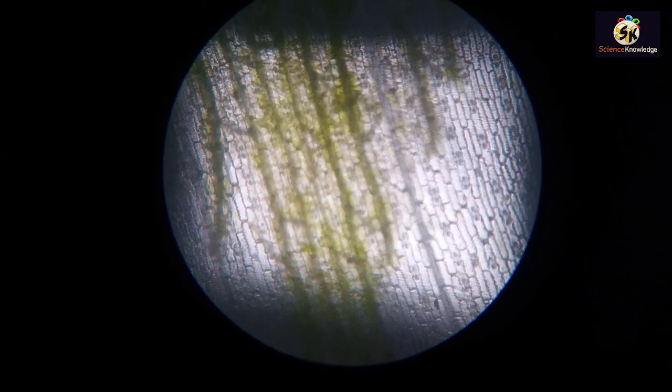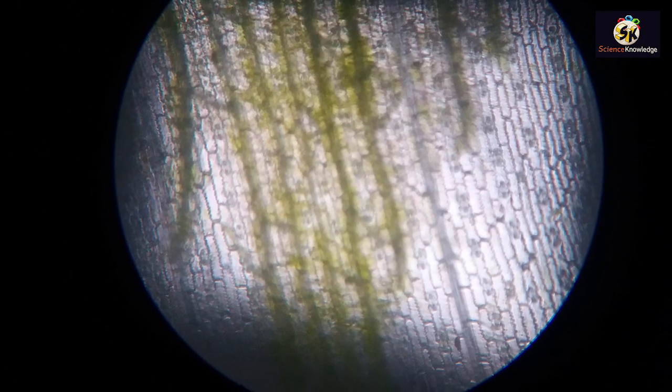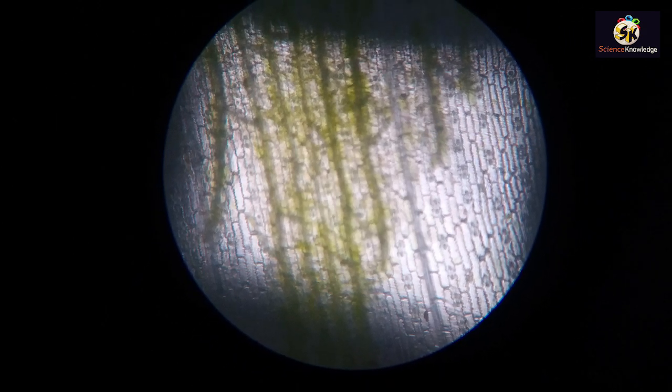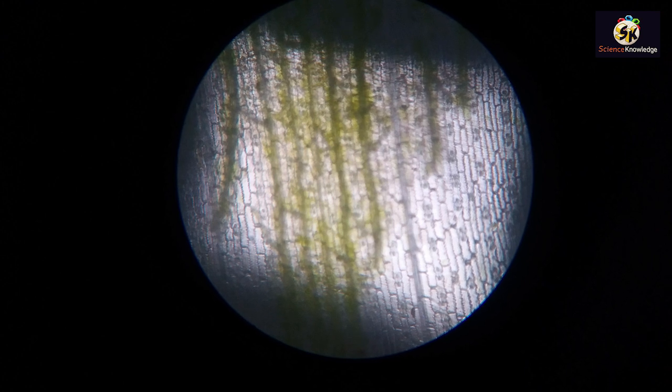Now all the area will appear dark except the window of one square millimeter. Here the light will pass and will illuminate the structure of epidermis and stomata. For measurement of stomatal density we have to measure the number of stomata present in one square millimeter area.